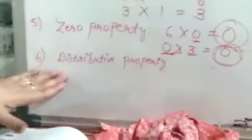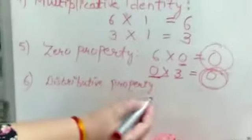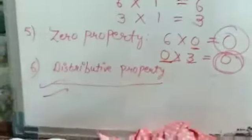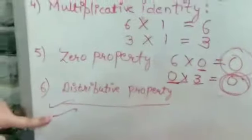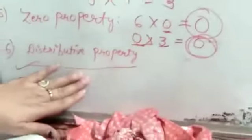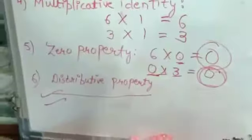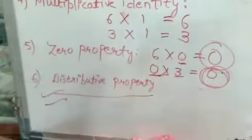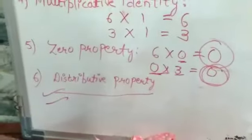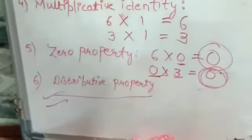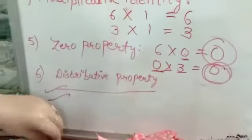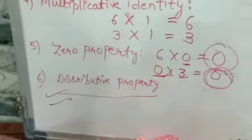The last property is distributive property — very, very important, because half of the exercise is based on distributive property. It is something new under multiplication because we have not studied distributive property under addition and subtraction. It is only under multiplication, so let me explain it in detail.